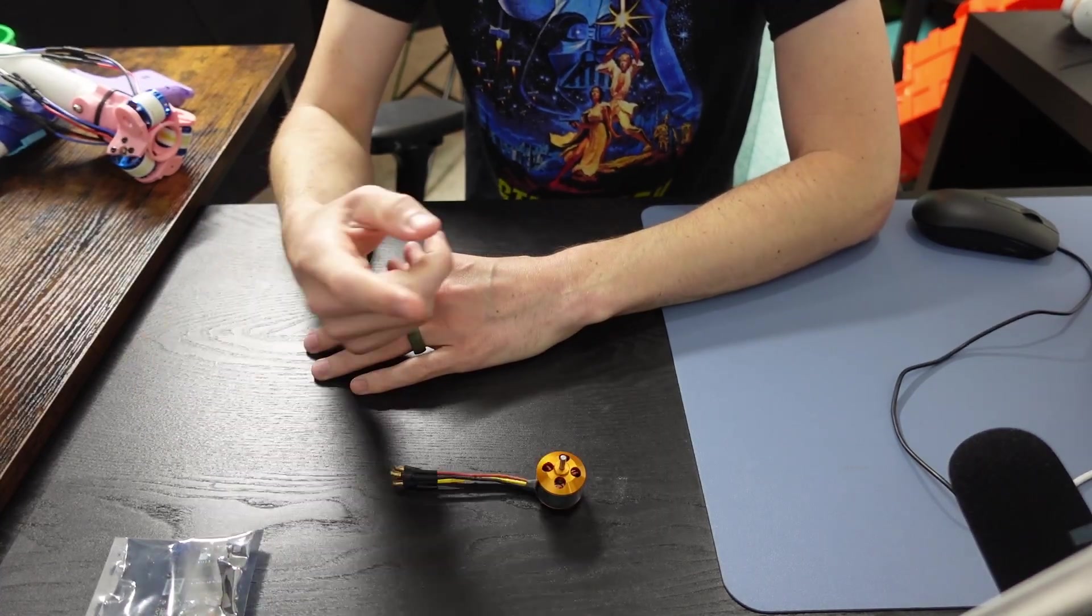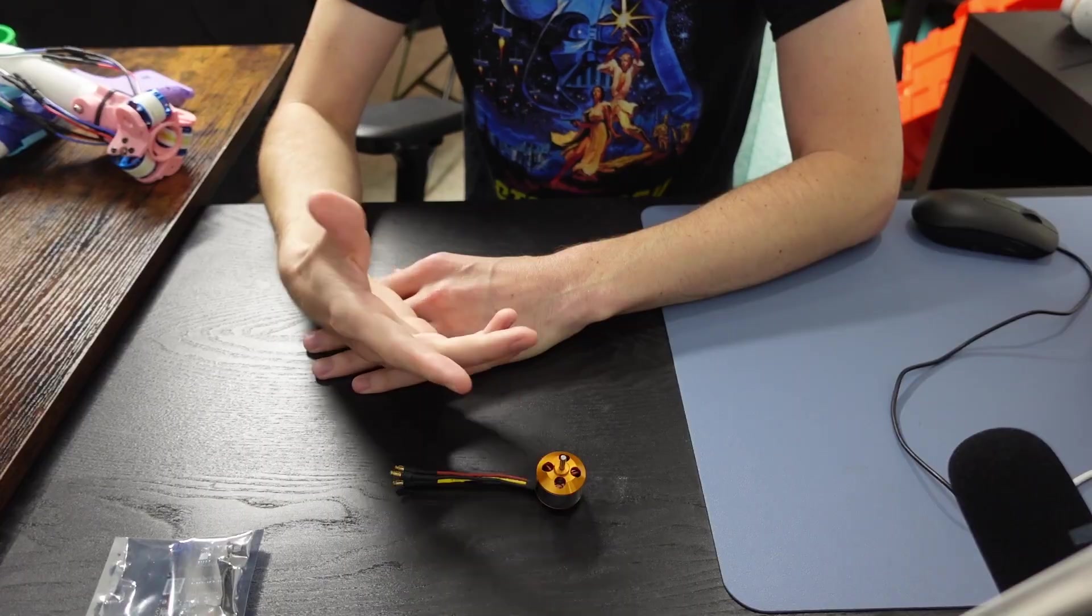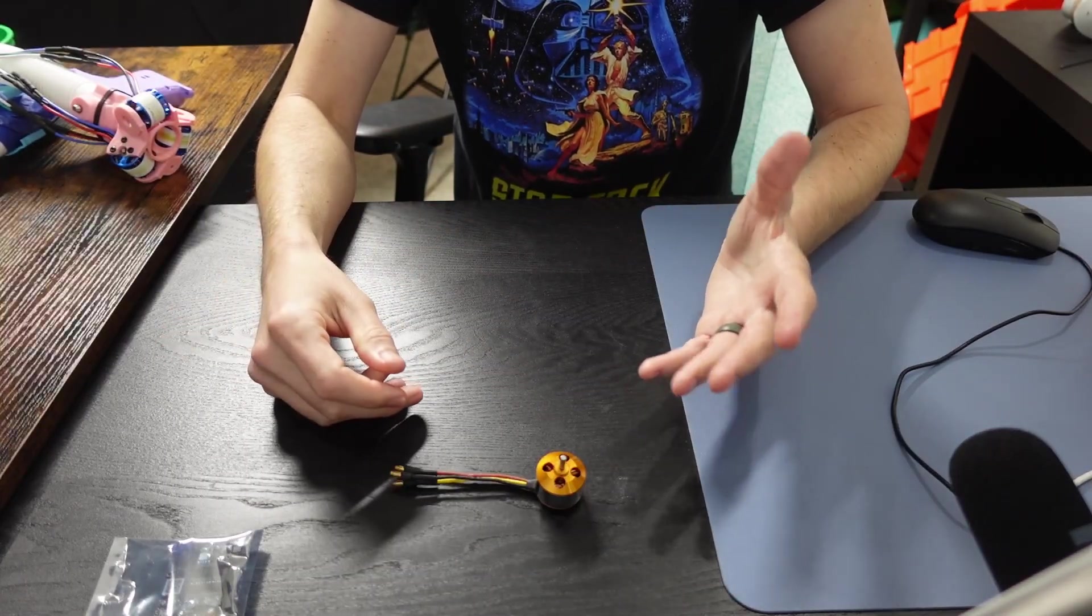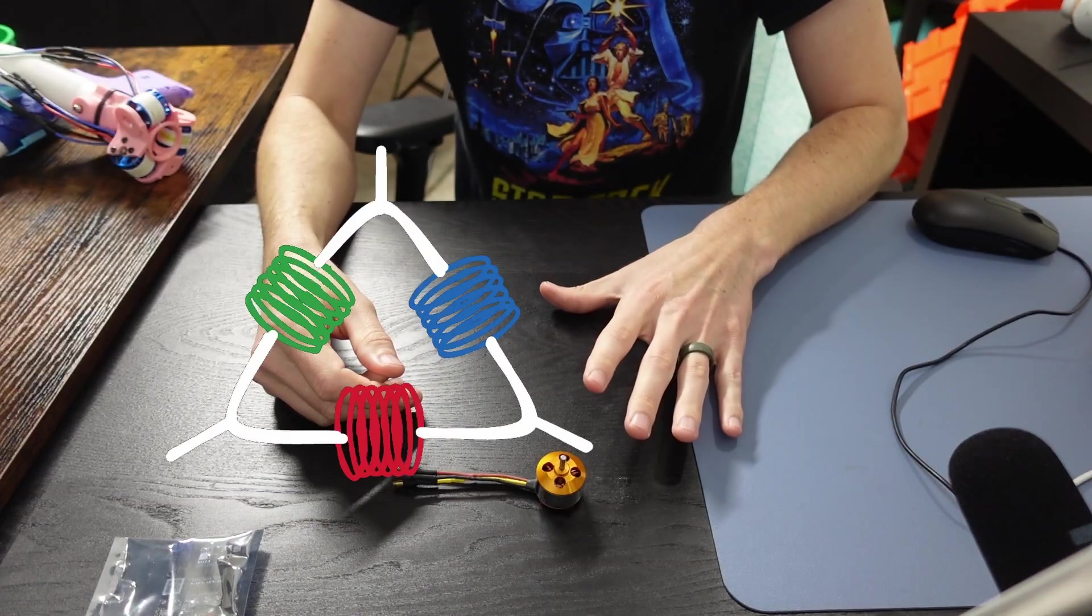The video focused on motors that are connected internally as a Y or star configuration. In this video, I'm going to cover how to do the same thing but for delta configurations.